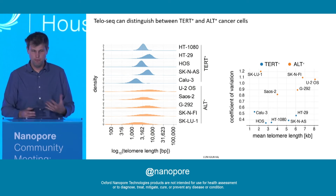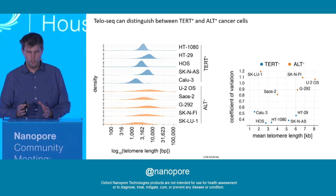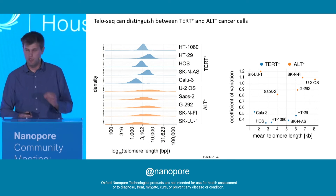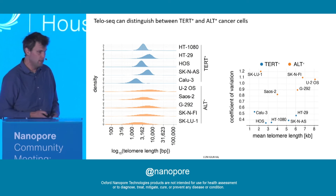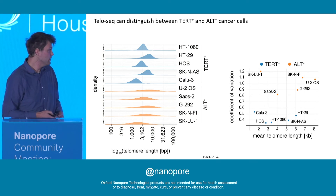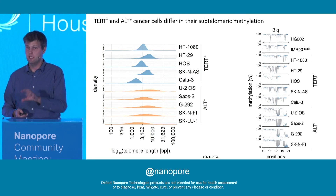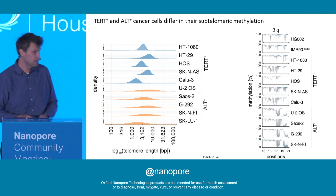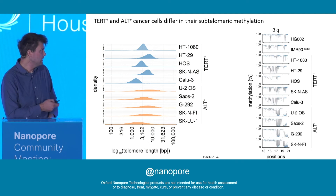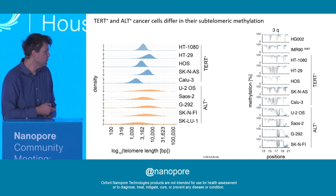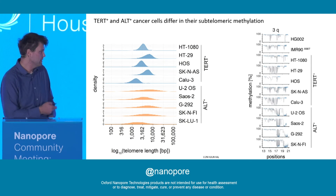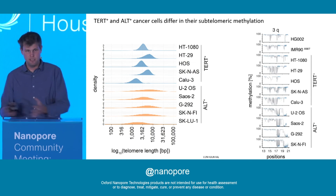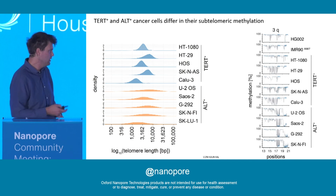Since we use native DNA as input, we can also obtain information about the methylation status of CpG sites adjacent to the telomeric sequence. In control and telomerase-positive samples, the majority of CpG islands in the subtelomere are hypermethylated, whereas in ALT-positive samples — shown here for chromosome 3q — they are hypomethylated. This provides additional information about subtelomeric methylation status.